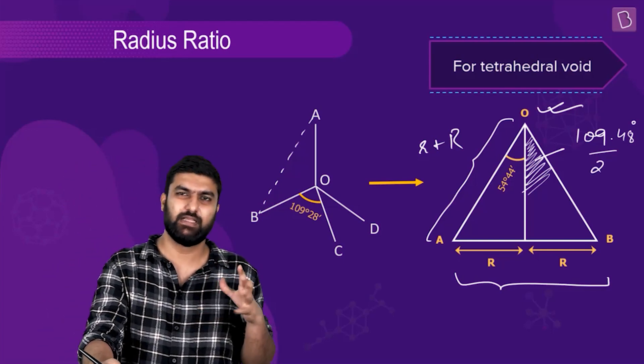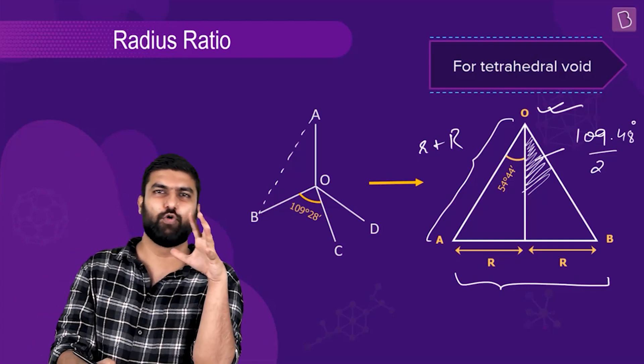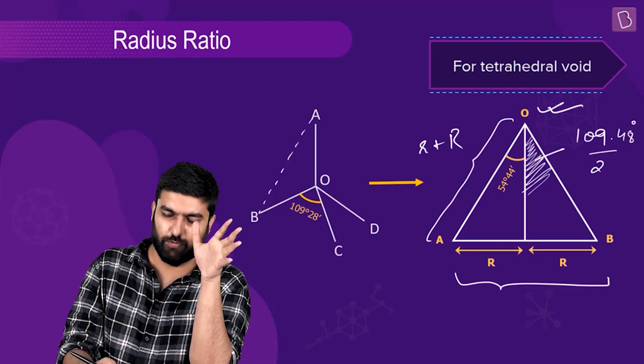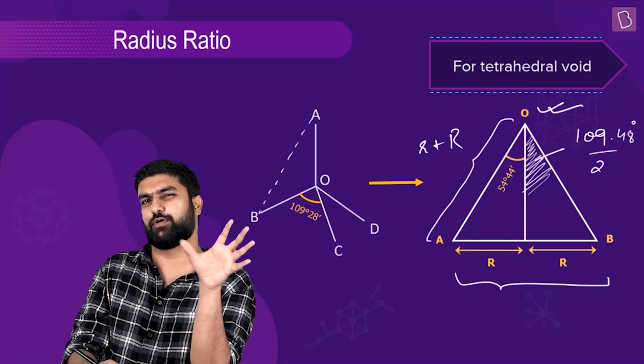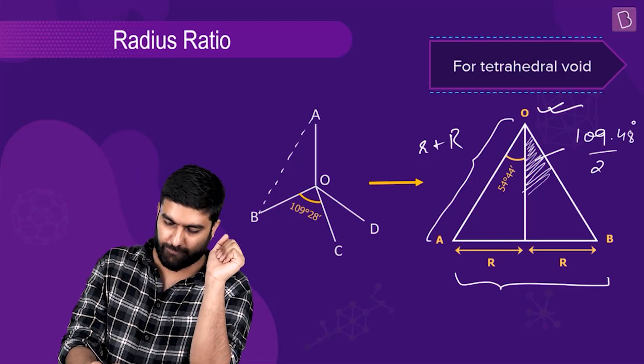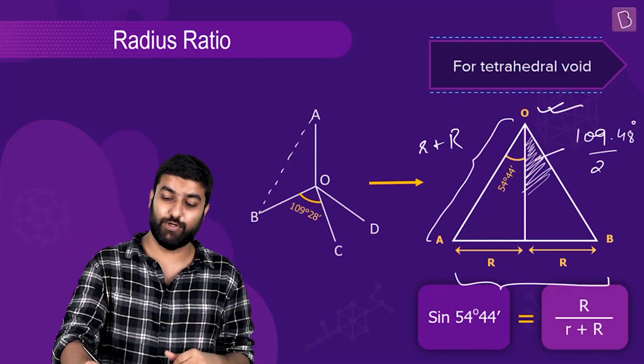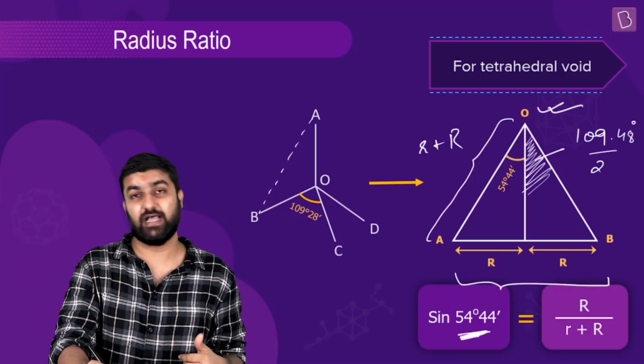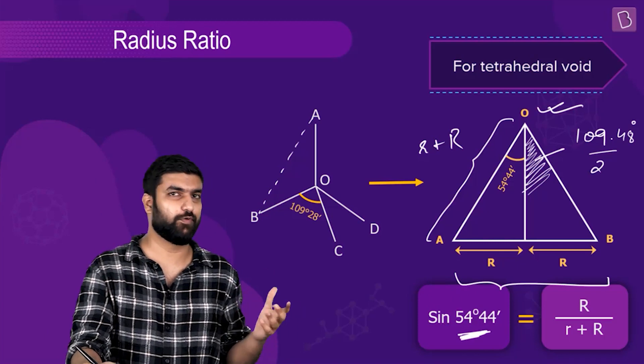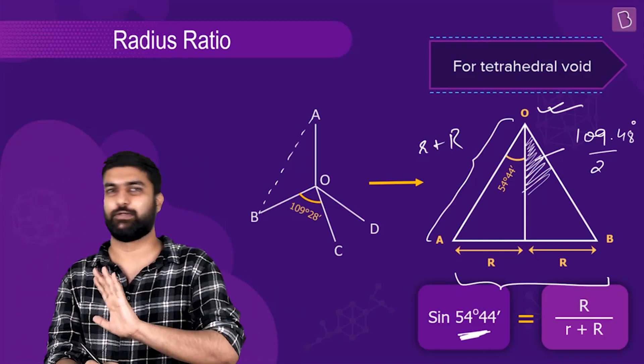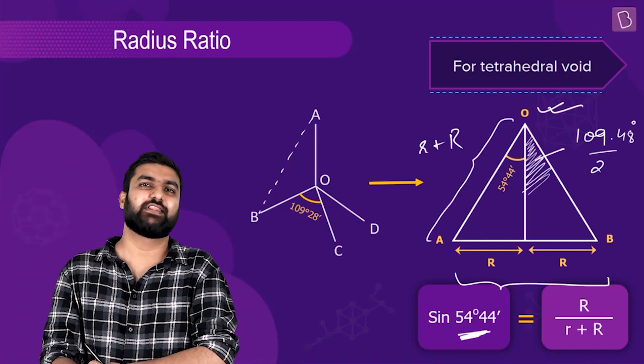What they have done here is they have used the sine angle. Having said that, it becomes equal to perpendicular divided by hypotenuse, which is this length. So that turns out to be capital R divided by small r plus capital R.